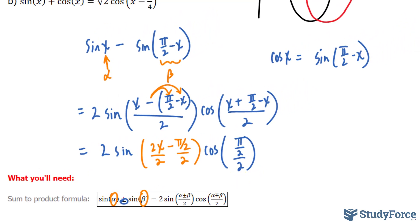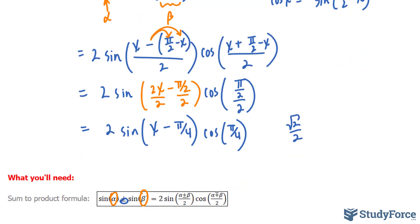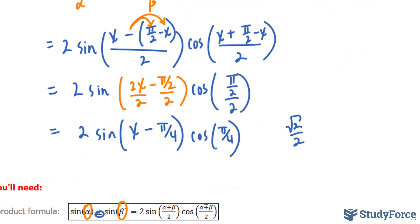If we simplify further, we end up getting 2 sin(x - π/4). And over here, π/2 divided by 2 is π/4. So, we have cos(π/4). That's a special angle. Cos(π/4) equals the square root of 2 over 2.